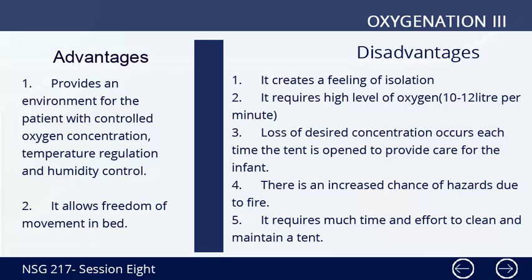Advantages: Number one, it provides an environment for the patient with controlled oxygen concentration, temperature regulation, and humidity control. Number two, it allows freedom of movement in bed. Disadvantages: Number one, it creates a feeling of isolation. Number two, it requires a high level of oxygen — 10 to 12 liters per minute. Number three, loss of desired concentration occurs each time the tent is opened to provide care for the infant. Number four, there is an increased chance of fire hazard. Number five, it requires much time and effort to clean and maintain a tent.